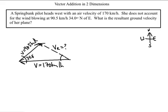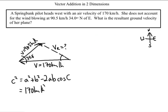And cosine law says that c squared equals a squared plus b squared minus 2ab cos c. So I'm going to let side c be the resultant velocity that I'm looking for.